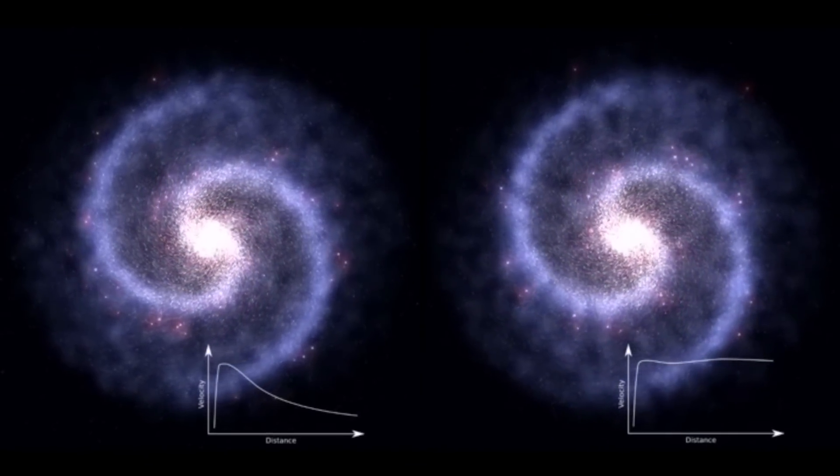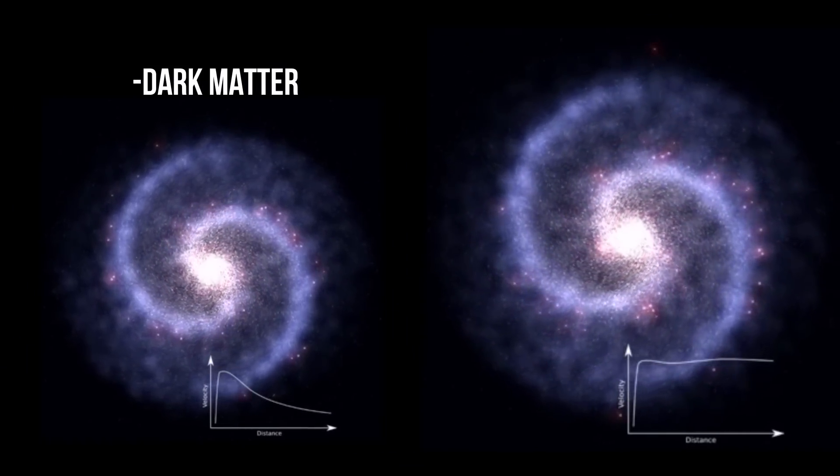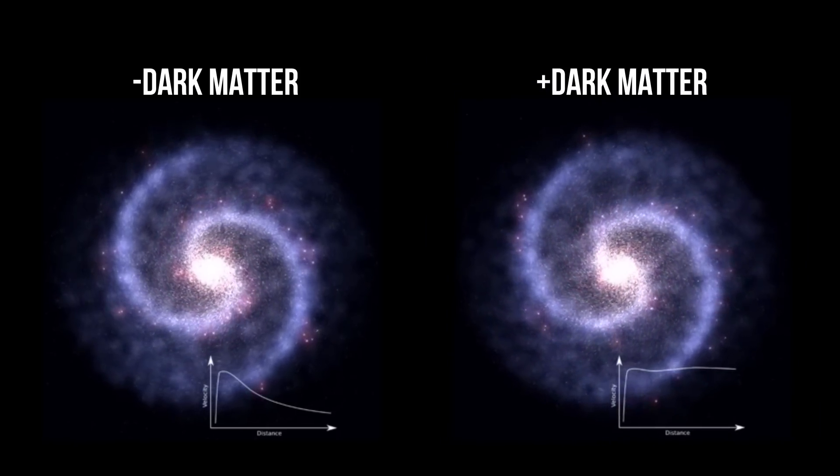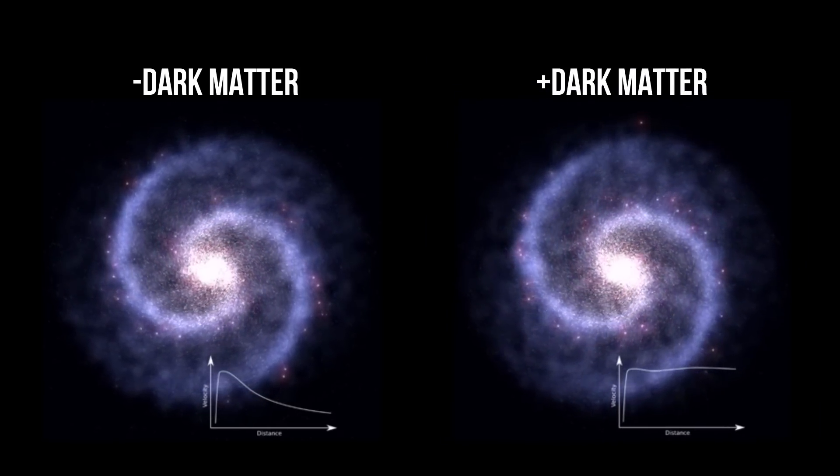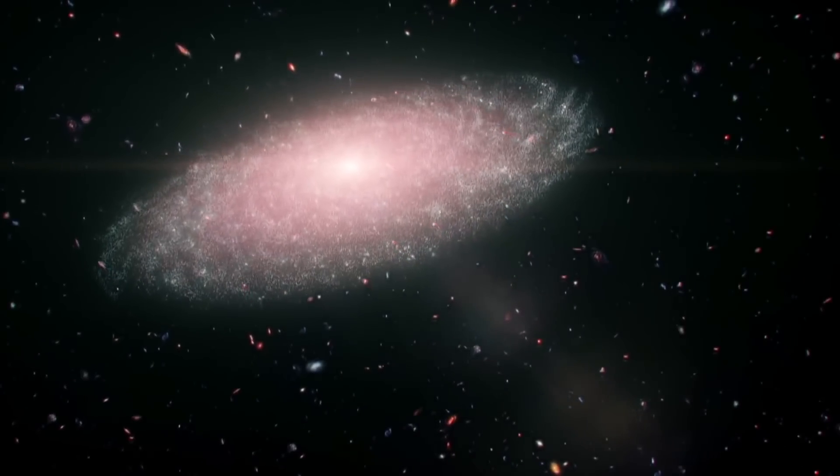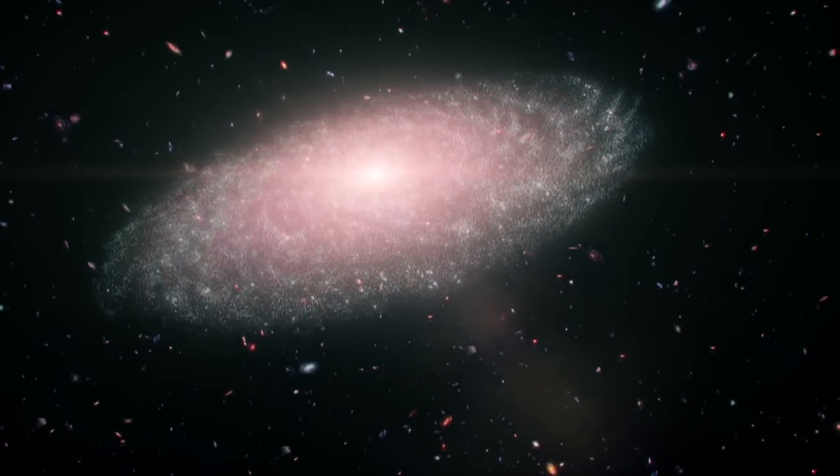Astrophysicists later saw that many galaxies rotate too fast, and if there were no external constraints, they would have stretched out their spiral arms all over the universe. The answer to this mystery lies in massive dark matter halos.